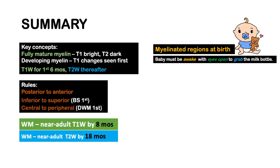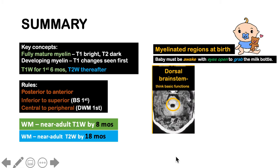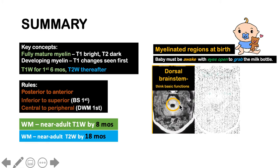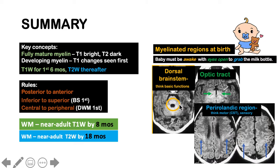By remembering this sentence — 'baby must be awake with eyes open to grab the milk bottle' — awake represents the reticular formation, which is in the dorsal brainstem; eyes open represents the optic tract; and grab represents the corticospinal tract, found in the perirolandic region, which sends axons to the posterior limb of the internal capsule and then the cerebral peduncles.